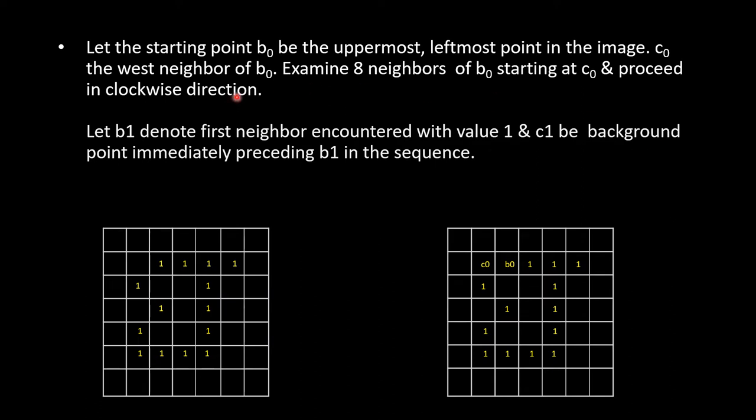Let the starting point B0 be the uppermost leftmost point in the image. So this is B0. C0 is the west neighbor of B0. So C0 should be over here. Let us see in this image B0 and C0. Examine the 8 neighbors of B0 starting at C0 and proceed in clockwise direction.